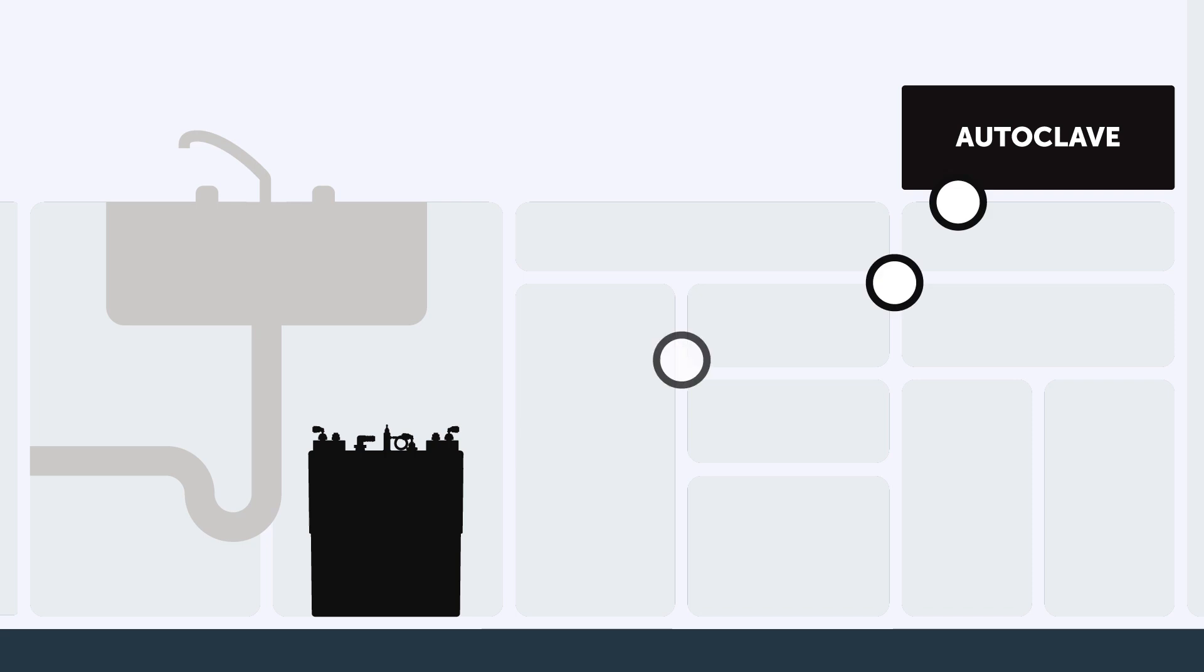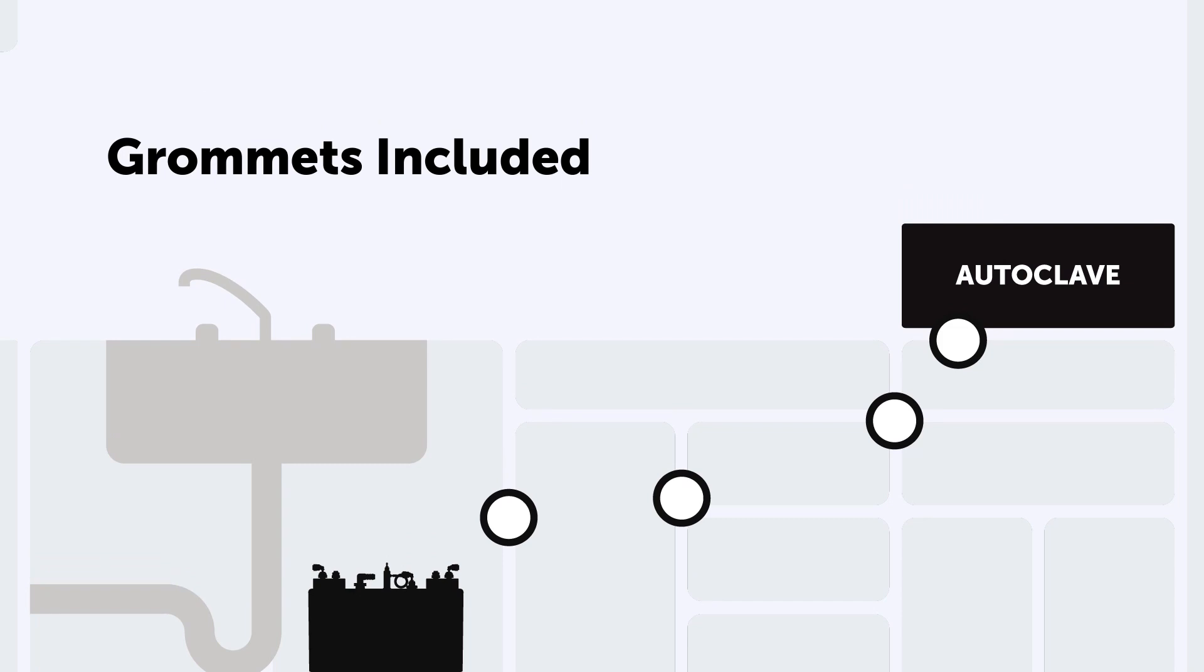In many cases, holes will need to be drilled through one or more partitions in order to get the tubing from the sterilizer to the VistaCool. In order to protect the tubing from kinking or damage, we've included grommets with each system, which are especially important to use when drilling holes in metal cabinets.